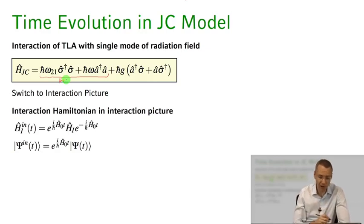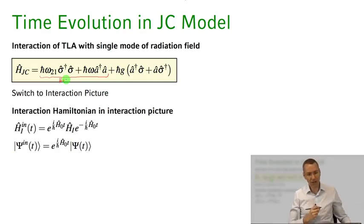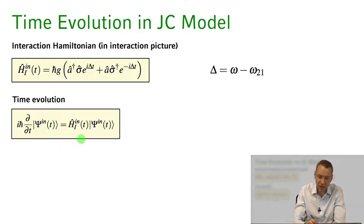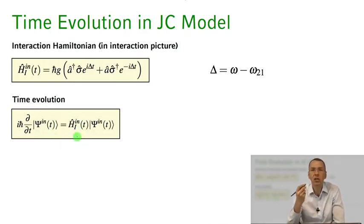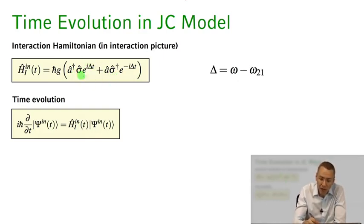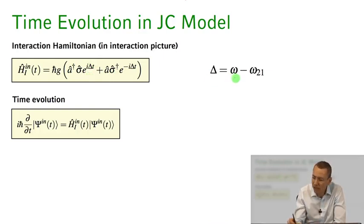We transform into the interaction picture, and the time evolution is given by a Schrödinger equation for the state vector in the interaction picture, with our interaction Hamiltonian now time-dependent due to the transformation. The interaction Hamiltonian in the interaction picture has the a-dagger sigma and a sigma-dagger processes, now dressed with detuning terms where delta is the frequency of the light field minus the resonance frequency of the atom.